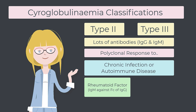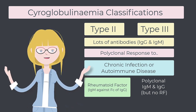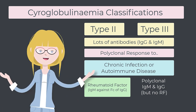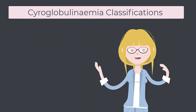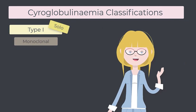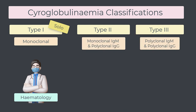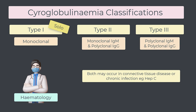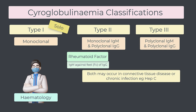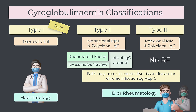We contrast this with type 3 cryoglobulinemia, where yes, we have heaps of antibodies around due to an infection or autoimmune disease, but there's no rheumatoid factor. To recap: type 1 is monoclonal — we need a hematologist always. Type 2 and 3 are polyclonal, both due to chronic stimulation of the immune system from either a chronic infection or autoimmune disease. Type 2 is the one with rheumatoid factor — a monoclonal IgM against the Fc portion or feet of the IgG. Type 3 is polyclonal but no rheumatoid factor. For type 2 and 3, depending on the underlying cause, we might need an ID physician, a rheumatologist, or both.